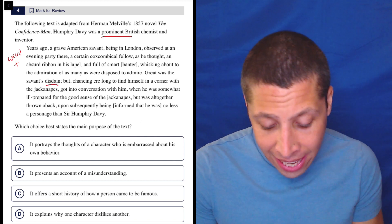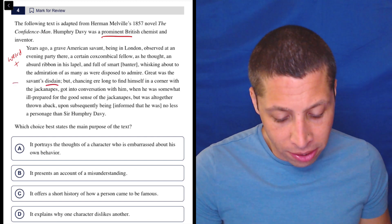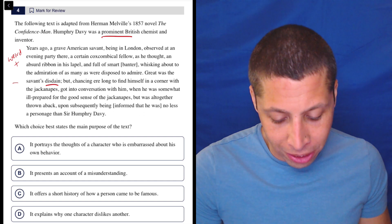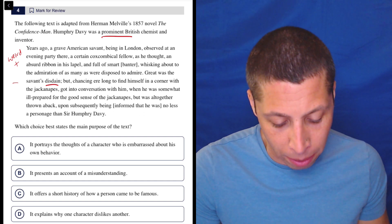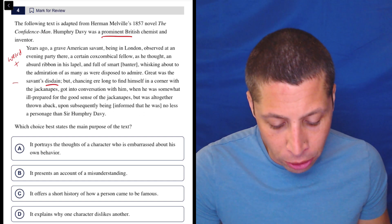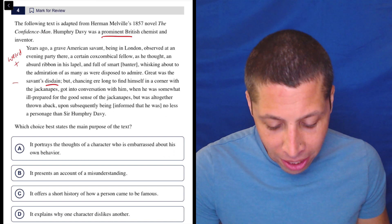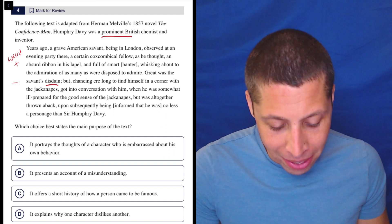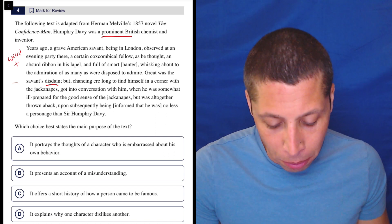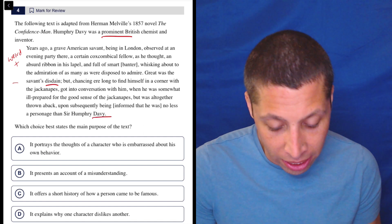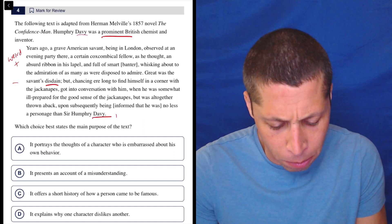Great was the savant's disdain. That's a negative word. But chancing ere long to find himself in a corner with the jack and apes, got into conversation with him, when he was somewhat ill-prepared for the good sense of the jack and apes, but was altogether thrown aback, upon subsequently being informed that he was no less a personage than Sir Humphrey Davy. So there's the guy from the beginning, right? So this is an important guy.